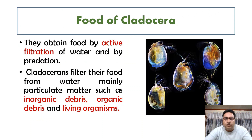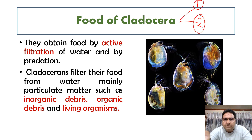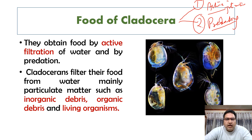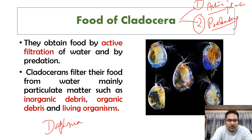We shall now be talking about the food of Cladocera. Newman divided Cladocera into two groups: the first group obtained food by active filtration, and the second group was predatory. Experiments showed that Daphnia and Bosmina, two well-known cladocerans, fed on ordinary pond debris.